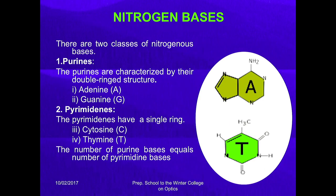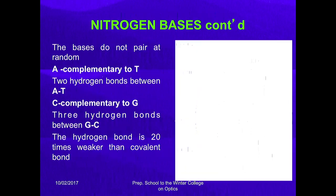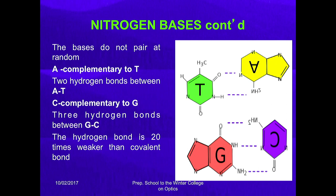There are two classes of nitrogen bases: purines and pyrimidines. Purines are characterized by their double ring structure — adenine and guanine are purines. Pyrimidines have a single ring — cytosine and thymine are pyrimidines. The number of purine bases equals the number of pyrimidine bases. The bases do not pair at random: A is complementary to T with two hydrogen bonds between them, and C is complementary to G with three hydrogen bonds between cytosine and guanine.